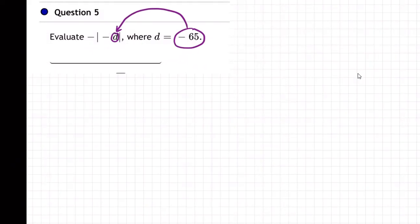So what do we get then? We get negative. Let me bring down the absolute values. And negative. So I've got this negative sign, this negative sign, and then d is itself negative 65 right there.